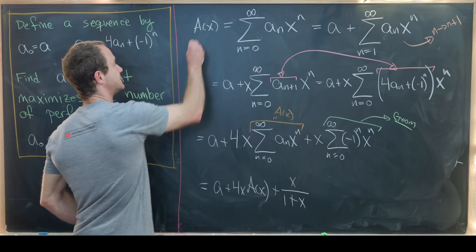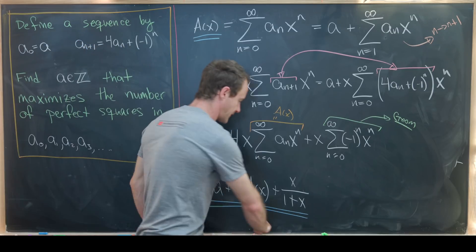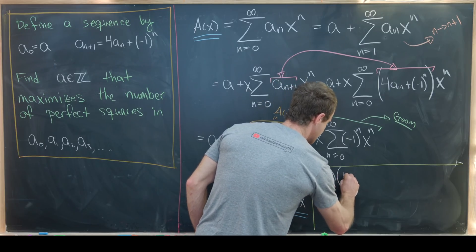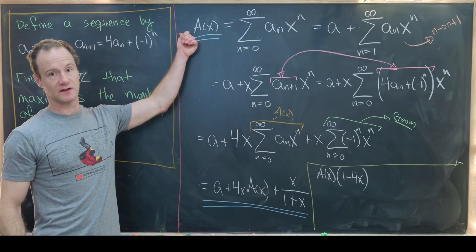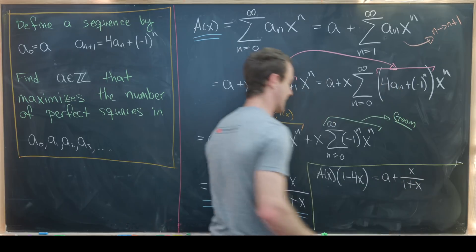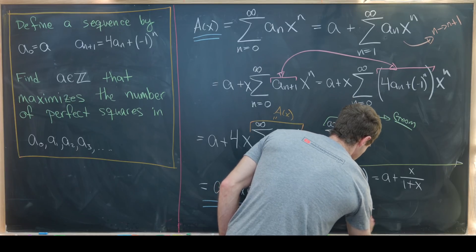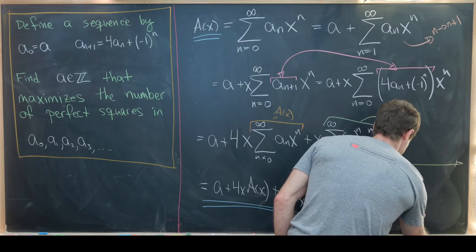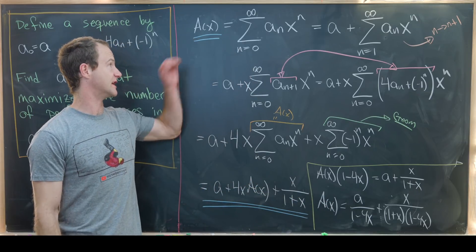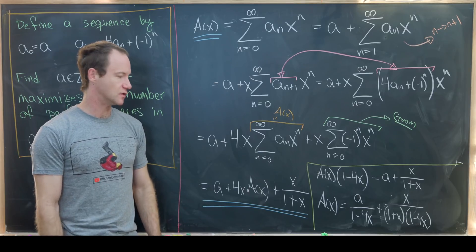Looking at the left and right hand sides, we can easily solve for A(x). Moving all A(x) terms to the left and factoring gives A(x)(1 - 4x) = a + x/(1+x). Dividing by (1-4x) yields A(x) = a/(1-4x) + x/((1+x)(1-4x)). We now have a nice rational function expression for our generating function, and on the next board we'll re-expand it to get a closed form for a_n.